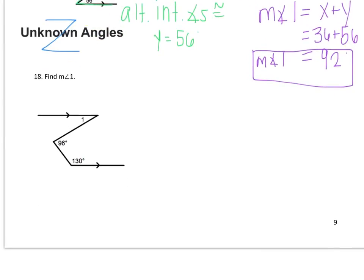In number 18 we have a similar problem. I see that I have measure of angle 1 up top. That's our goal. That's what we're trying to find here. I also have 96 somewhere in the middle there and I have 130 down at the bottom. So I'm going to draw in an auxiliary line to help me solve this problem.